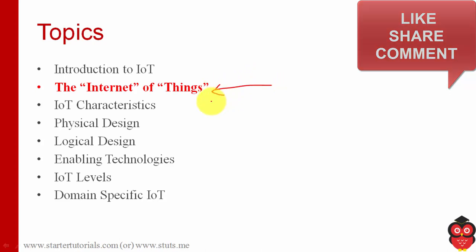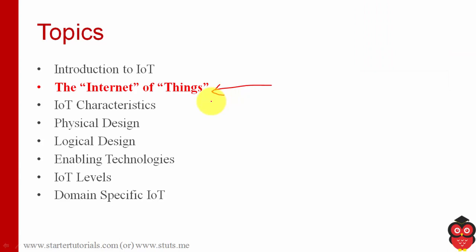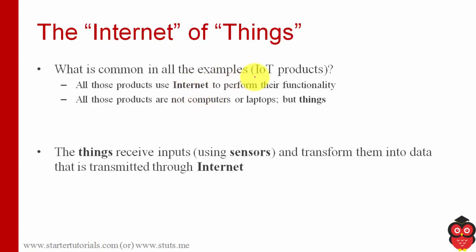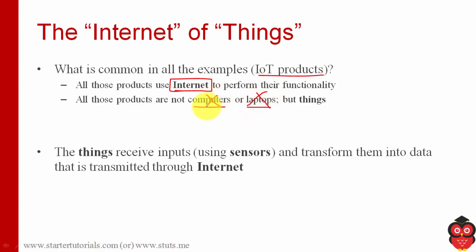Now let's look at the definition of Internet of Things. We'll look at a different definition from the previous session. You've seen many IoT products — Google Home, Amazon Echo, Nest Cam, and more. What is common in all those IoT products? All those products are connected to the internet, either through Wi-Fi or some other technology. And they are not computers or laptops — you saw a coffee maker, a tracking device — so what are those things called? They are simply called 'things.'